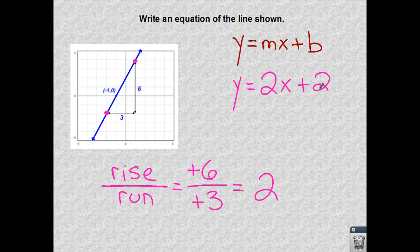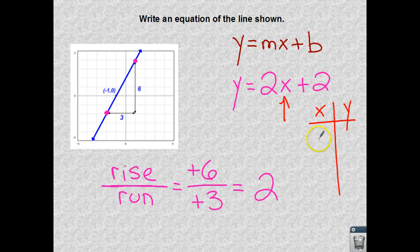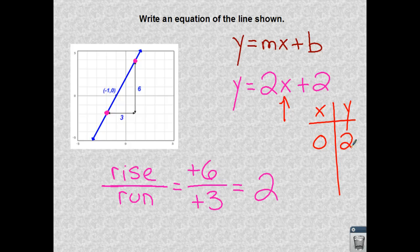Now if you wanted to check it, you can take any random numbers in a function table. So you have your inputs and your outputs. And you can make up a value for x and then plug it into your equation. So let's just say x is 0. I'm just going to make that up. 2 multiplied by 0 is 0. Added to 2 would get me my output. And that 0, 2 should be on my line.